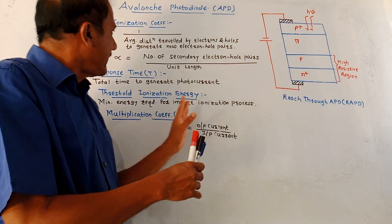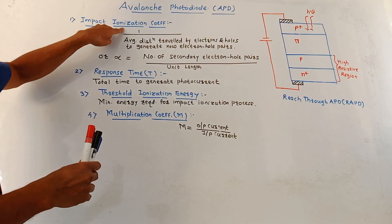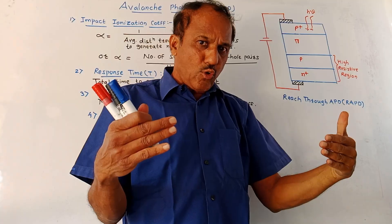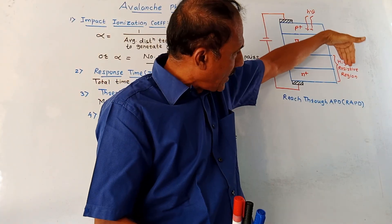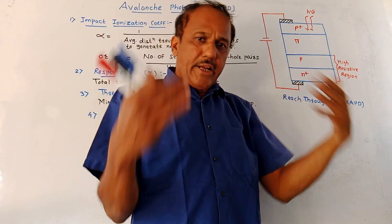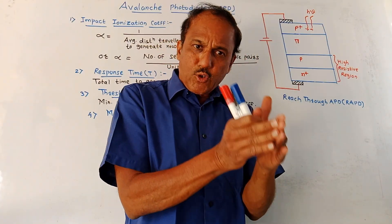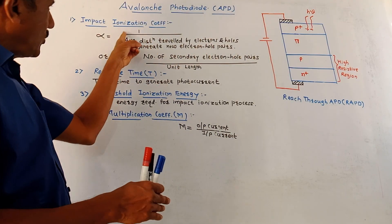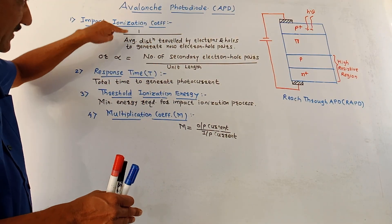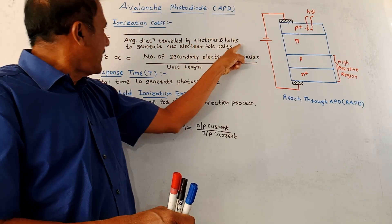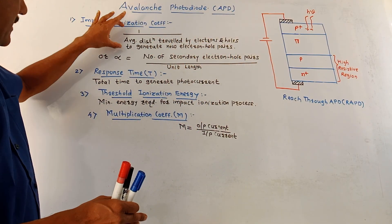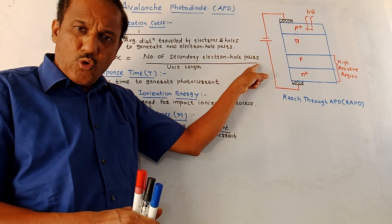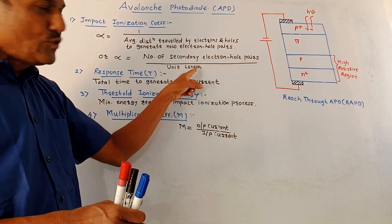Now we will discuss few important parameters related to this avalanche photodiode. First is the impact ionization coefficient. When photons fall on this structure, electron hole pairs are generated — major electron hole pairs are generated in the pi region. When charge carriers move into the highly resistive region, new electron hole pairs are generated. To generate new electron hole pairs, the original electron hole pairs created in the pi layer have to travel a certain distance. So the impact ionization coefficient is the reciprocal of the average distance traveled by electrons and holes to generate new electron hole pairs. It is denoted by alpha, and another definition of alpha is the number of secondary electron hole pairs per unit length of the structure.